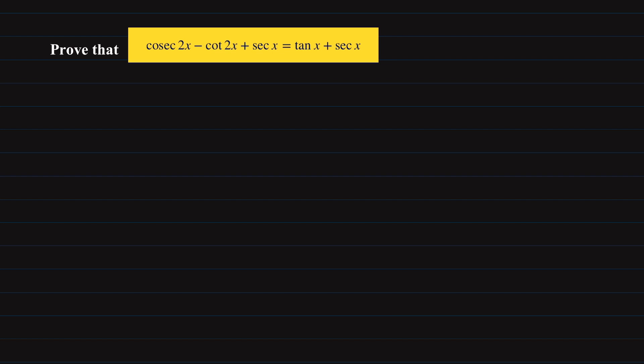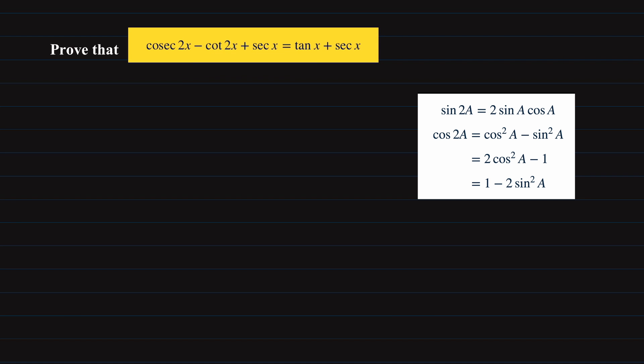You realize that the angles are in terms of 2x and x, so we can employ the double angle formula to convert all these double angles into a single angle. Starting off with the left-hand side, we'll have 1 over sine 2x minus cosine 2x over sine 2x, plus 1 over cosine x.